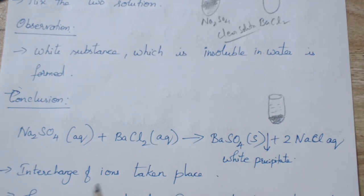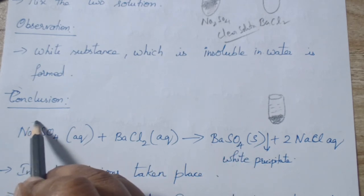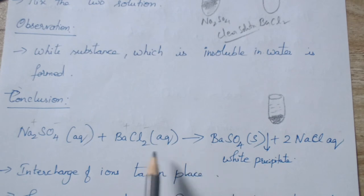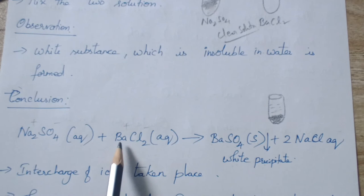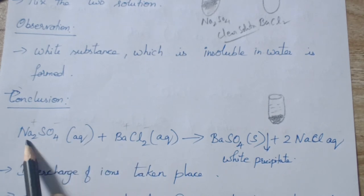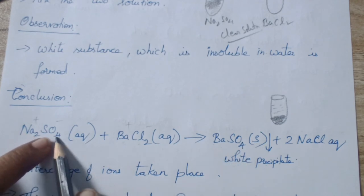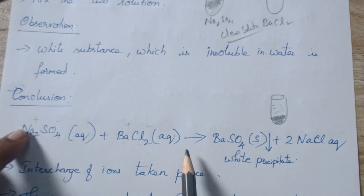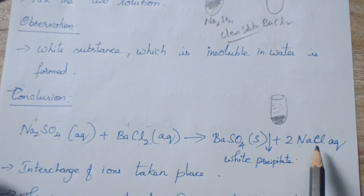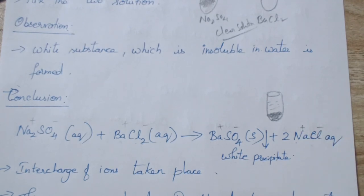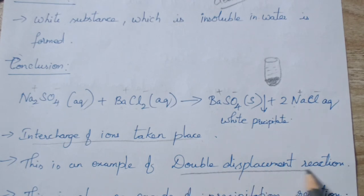What is your conclusion from this — what happened here? Na⁺ and SO₄²⁻ are in one solution; Ba²⁺ and Cl⁻ are in another. Now, barium (positive) combined with SO₄ (negative), and sodium (positive) combined with chloride (negative) — interchange of ions has taken place. Ba²⁺ combined with SO₄²⁻ gives BaSO₄, and Na⁺ combined with Cl⁻ gives NaCl. Only a simple interchange of ions has taken place. This is an example of a double displacement reaction.